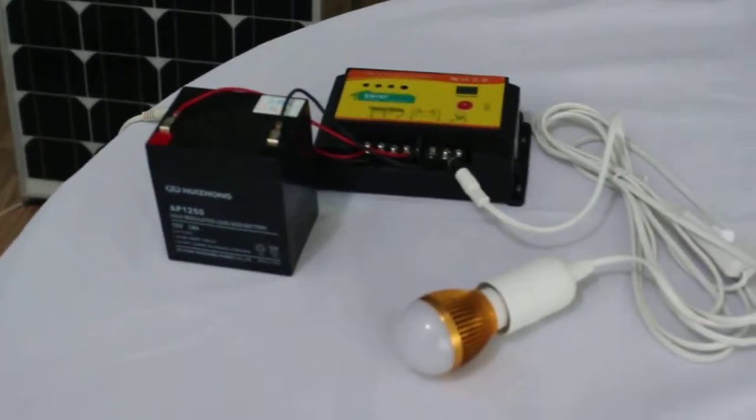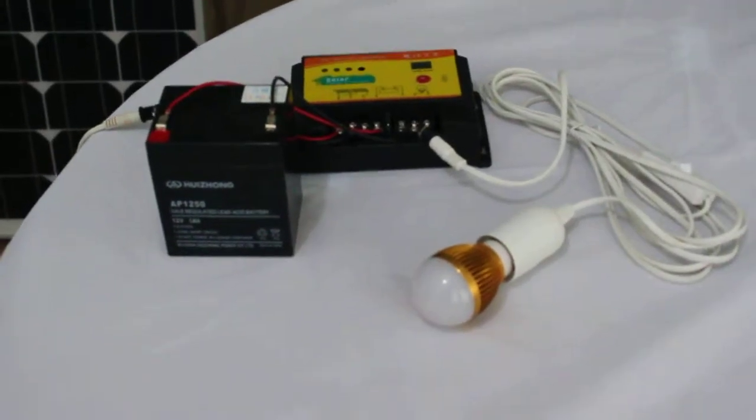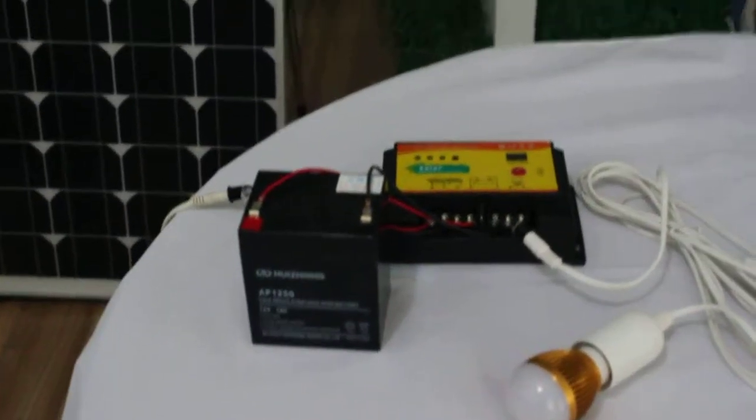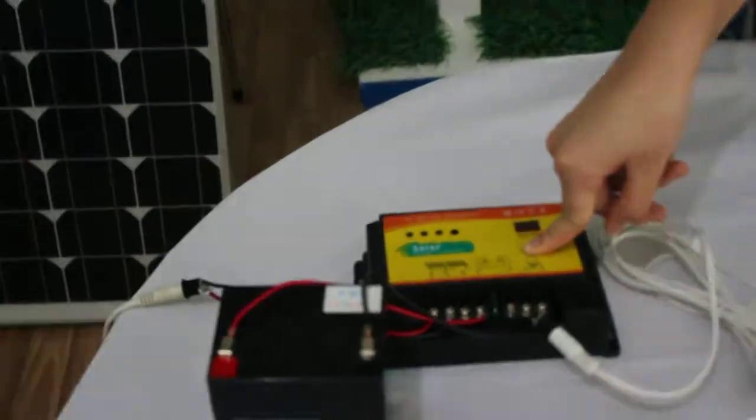Second model, model 0. Now we need to change model 17 to model 0. It's the same step. Press the button 5 seconds until the indicator flashes obviously. Then press it again. Now it's model 0.